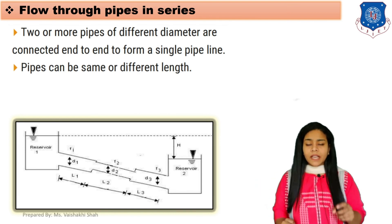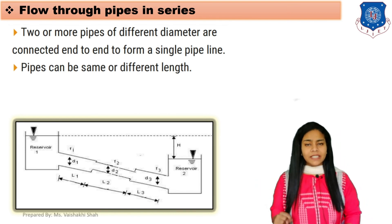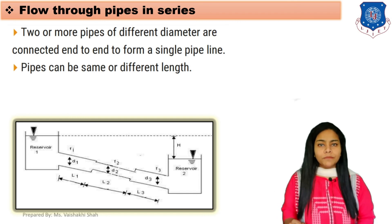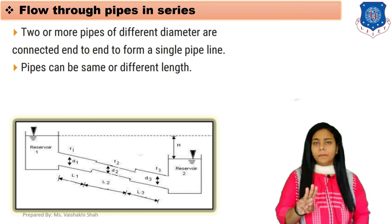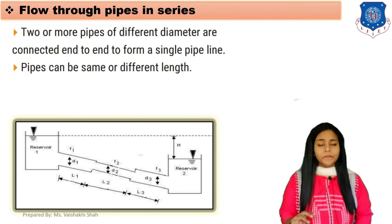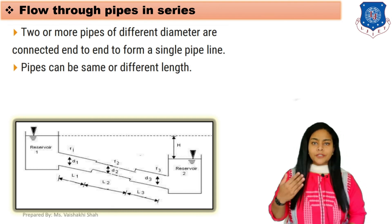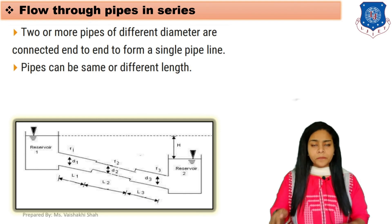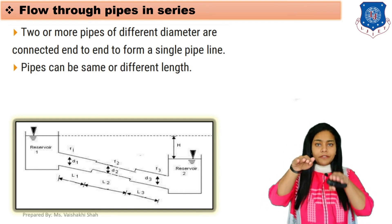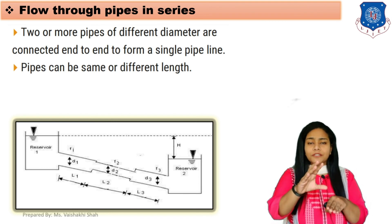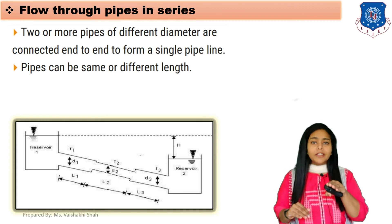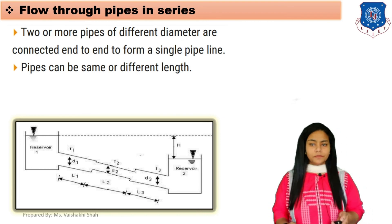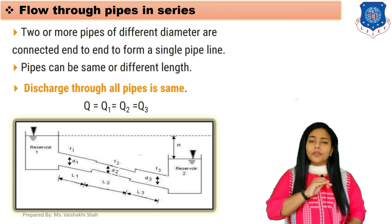Pipe one has diameter d1 and length l1. The diameter of the second pipe is d2 and length l2. The diameter of the third pipe is d3 and length l3. The two reservoirs are connected with these different pipes of different lengths and diameters. The head difference between the two reservoirs is H — the difference in water level between the two reservoirs.